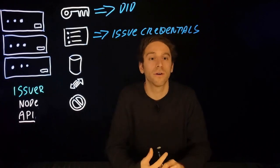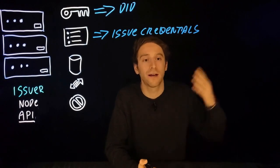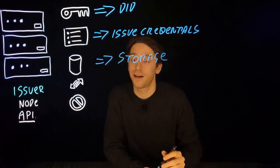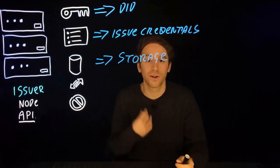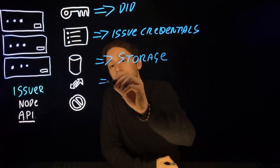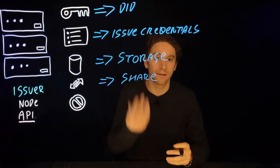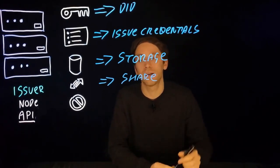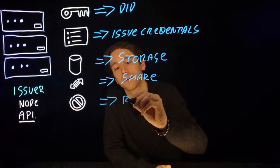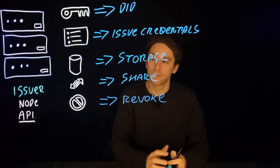The third API allows an issuer to store a credential inside the database so that it can be retrieved and fetched at a later point in time. A further API allows an issuer to communicate with a user's wallet and share credentials with them. This can be shared in the form of a QR code or via a hyperlink.